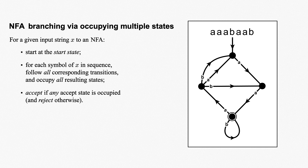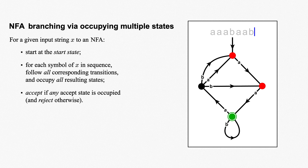Let's run through the same input string marking our occupied states. We start with just one branch occupying the start state. For our first three As, we only have one transition to follow, so this behaves just like a DFA. With our first B, our one branch splits to occupy two states, one for each B transition. Our next two As rotate these occupied states around. And on our final B, one branch comes back to where it started, and the other splits into two, leaving us three branches occupying three states. One of these branches ends at an accept state, so our NFA accepts the string AAABAAB.